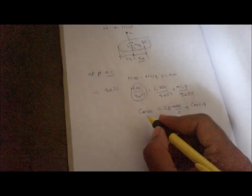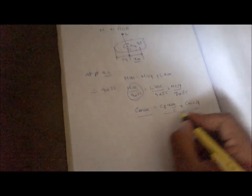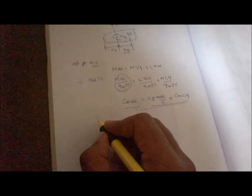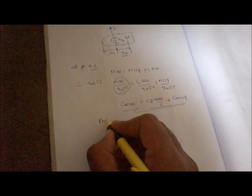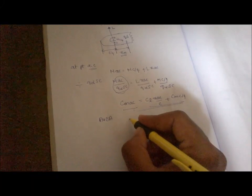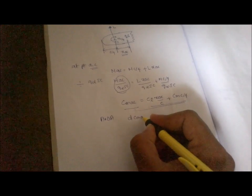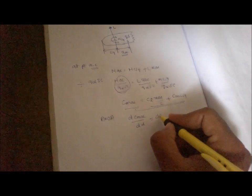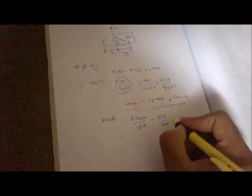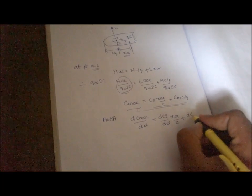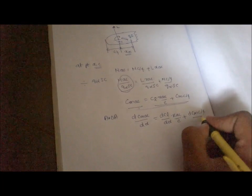Now differentiate this equation with respect to angle of attack. You will get dC_M_AC by d alpha is equal to dC_L by d alpha times X_AC by C plus dC_M_C/4 by d alpha.